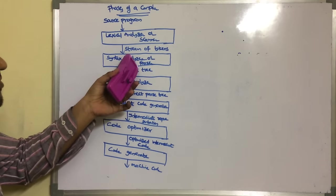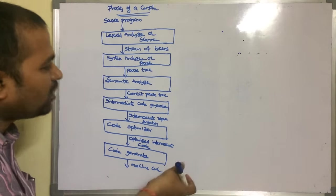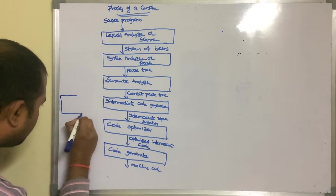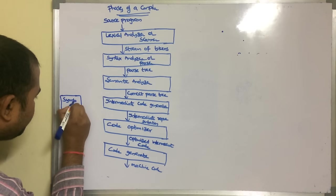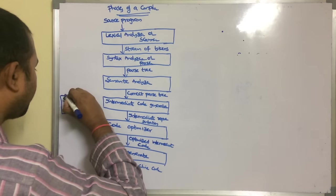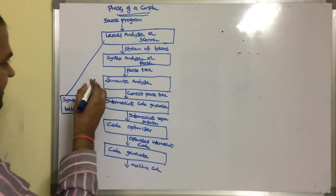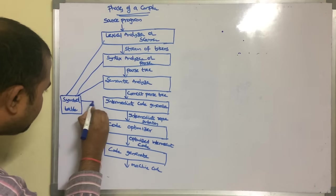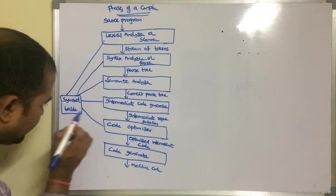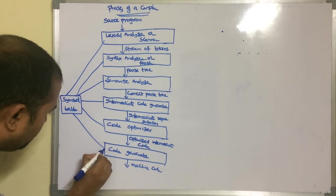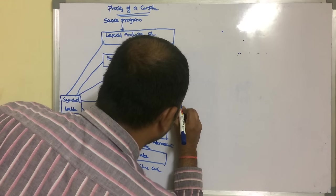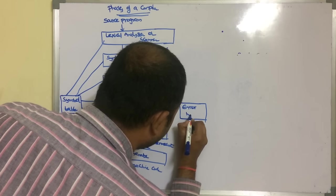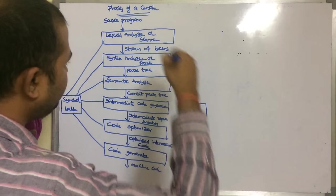Each phase receives input from its previous phase and provides output to its next phase. We have a data structure called symbol table, which interacts with all the phases of the compiler — lexical analyzer, syntax analyzer, semantic analyzer, intermediate code generator, code optimizer, and code generator. We also have an error handler to handle errors, which also interacts with all the phases.